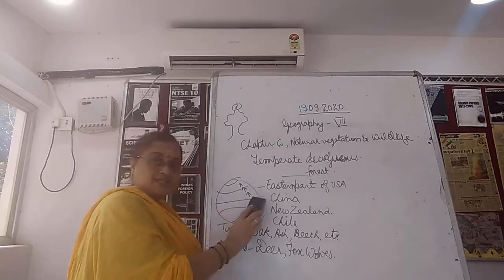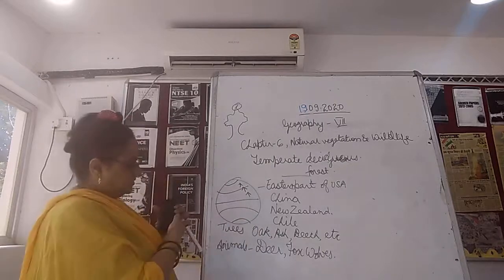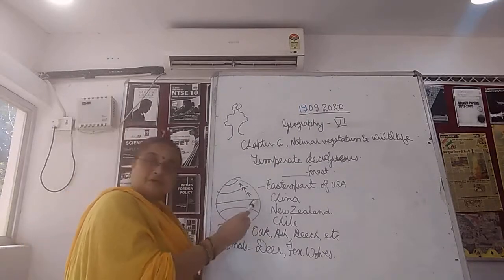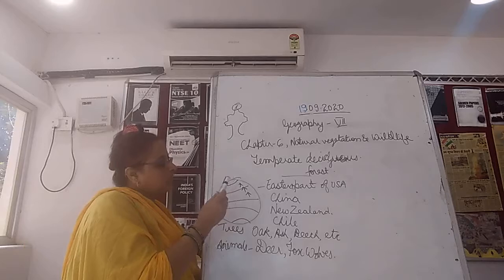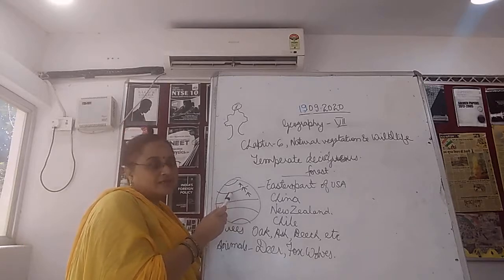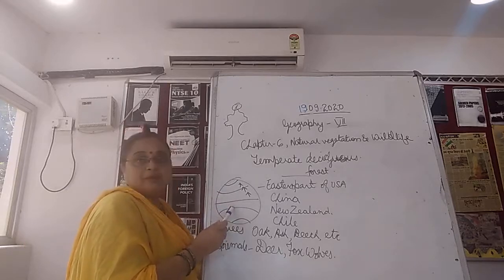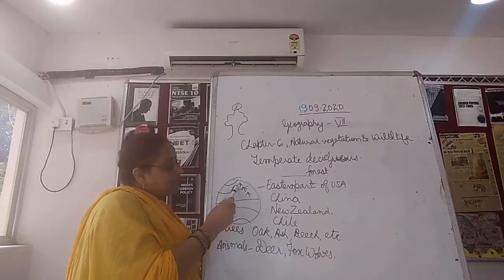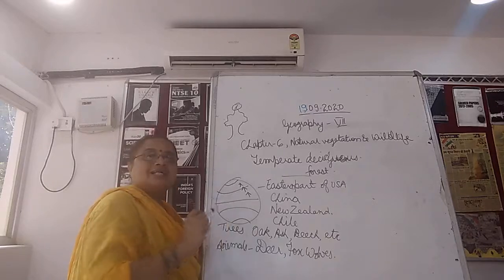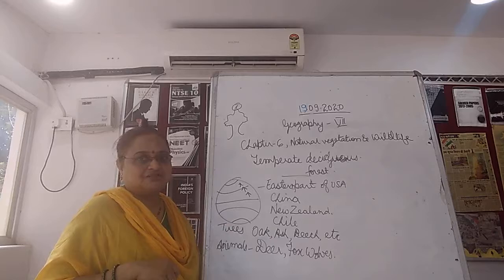Please understand. This is the equator. Here we have the Tropic of Cancer. Here we have the Tropic of Capricorn. When you go above the Tropic of Cancer, then it is the temperate region — a temperate type of climate.